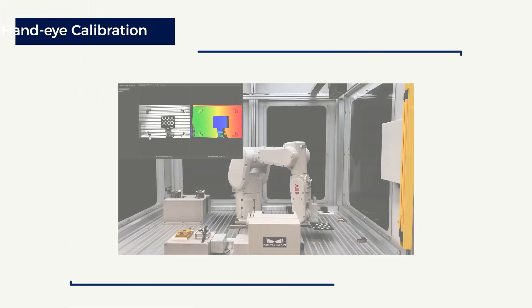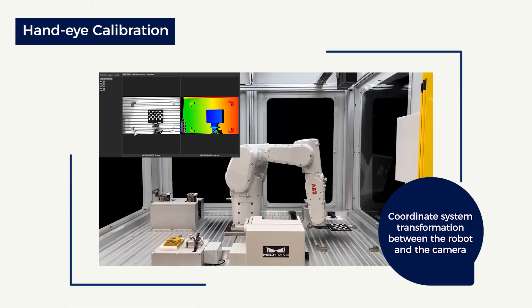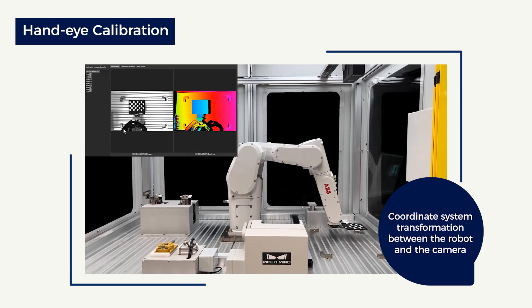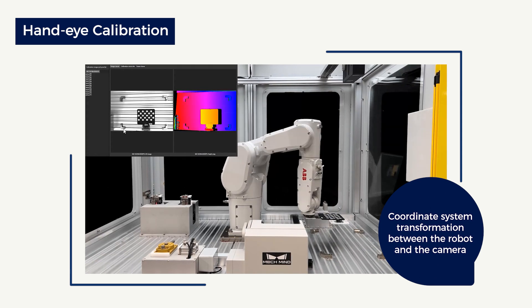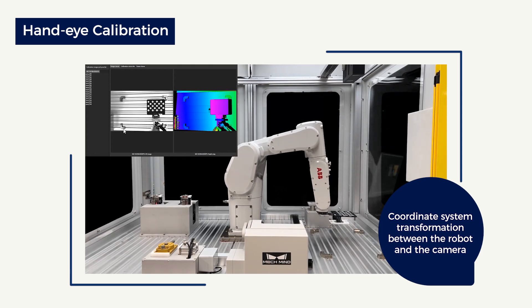In hand-eye calibration, complete the calibration process to obtain the coordinate system transformation between the camera and the robot reference frame.